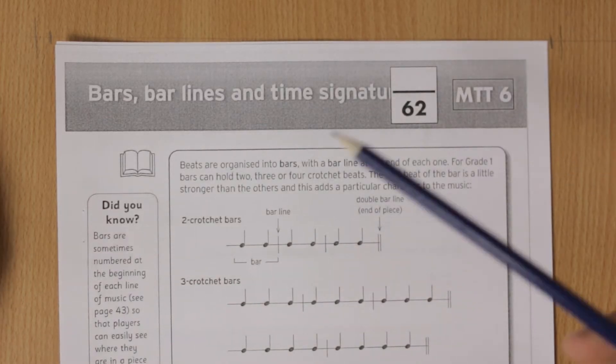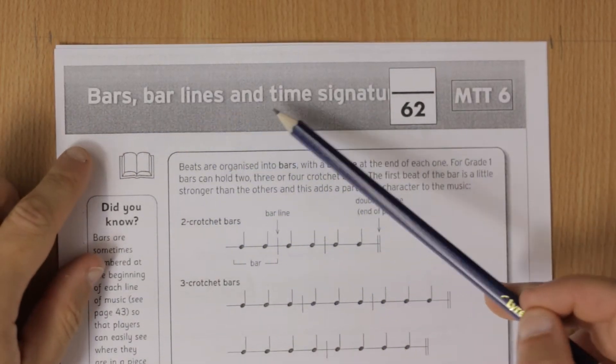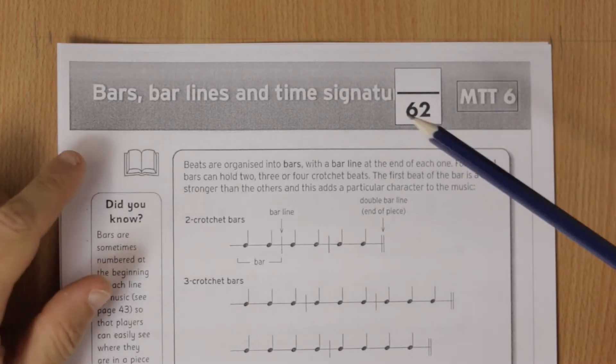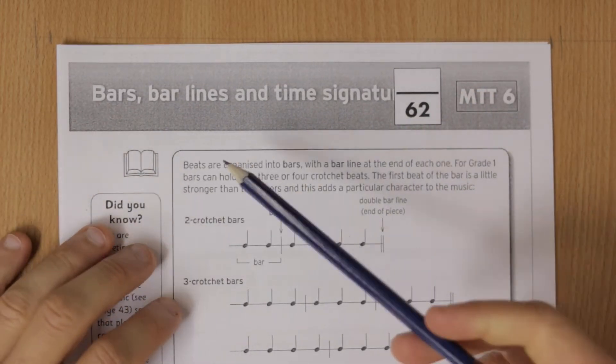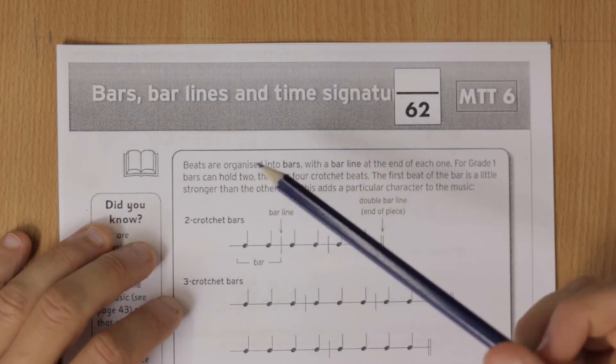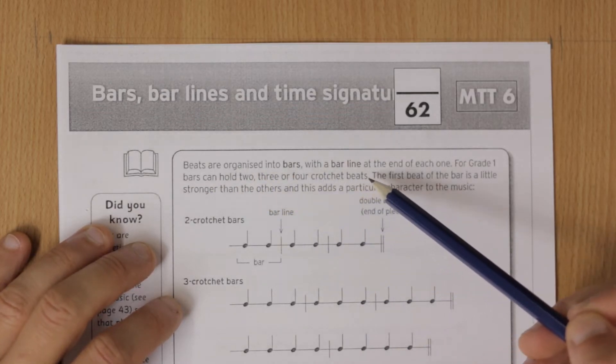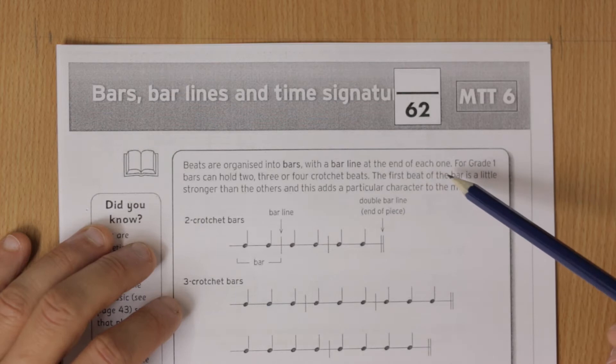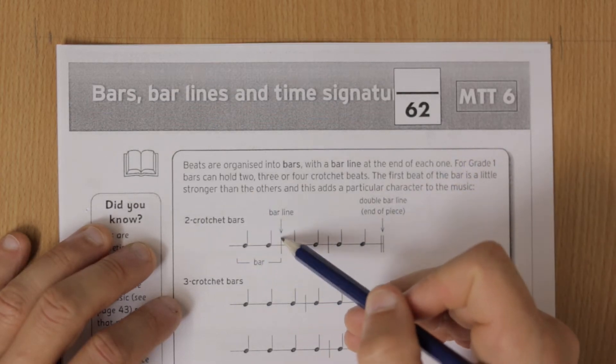MTT 6, this is all about bars, bar lines, and time signatures. Let's have a listen to see what this is about. Beats are organized into bars with a bar line at the end of each one. So we've got bars with bar lines dividing them up.